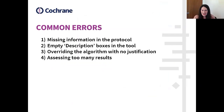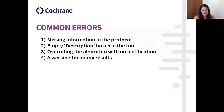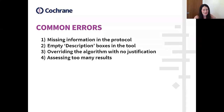The ones I'm going to describe are generally applied to the whole process. As Rachel talked about the domains, I'm going to talk about general and common errors that happen. These are: missing information in the protocol, empty description boxes in the tool, authors overriding the algorithm with no justification, and assessing too many results.